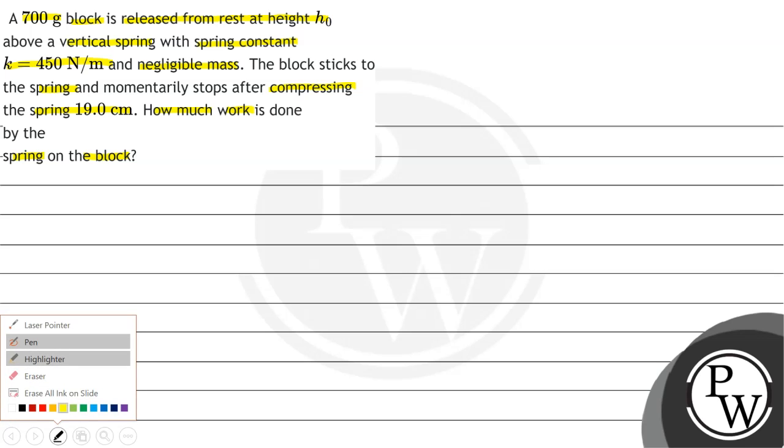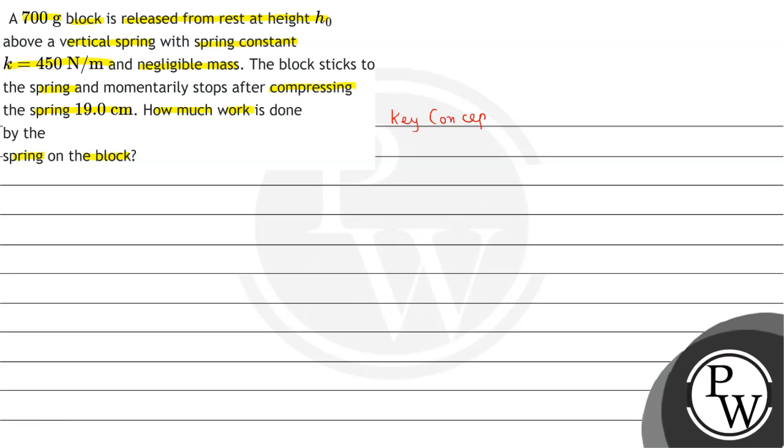First we can see the key concept. How much work done by a spring on the block is given by the formula W equals half kx squared. Here the value of k is the spring constant and the value of x is the compression of the spring.